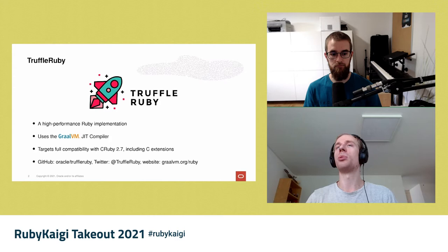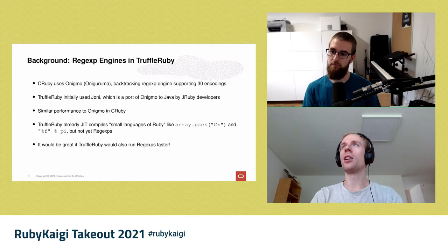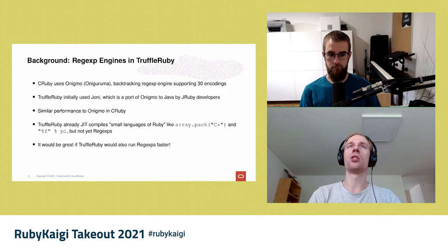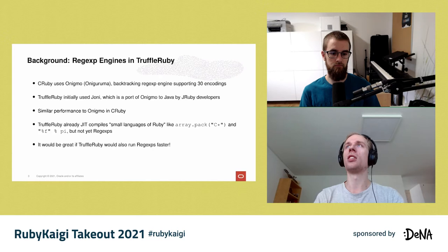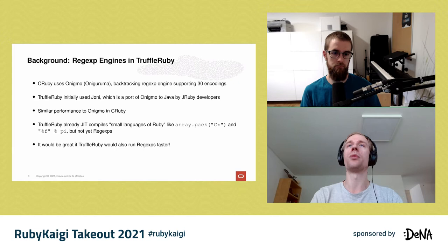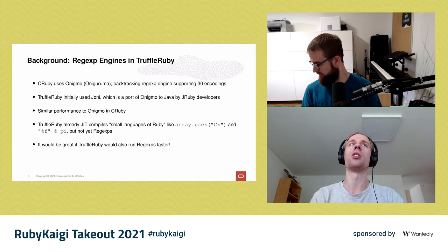Let's start with some background. Regular expressions are always run by a regular expression engine. For CRuby that's Onigmo, which is a fork of Oniguruma — both are backtracking regular expression engines. What's specific about them is they support 30 encodings, which is quite a lot, while most regex engines only support one or two. TruffleRuby initially used Joni, which is just a port of Onigmo to Java by JRuby developers, so it has basically the same performance as Onigmo but is convenient for compatibility.